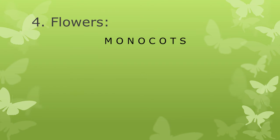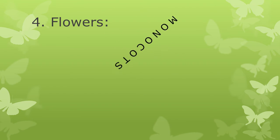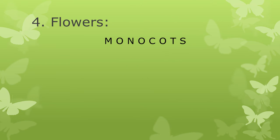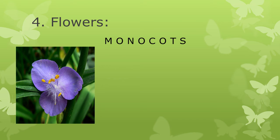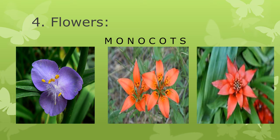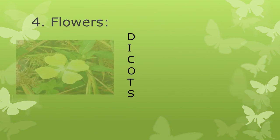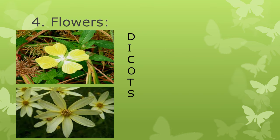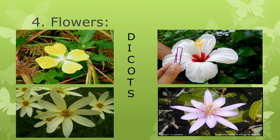Fourth: Flowers. To differentiate Monocot from Dicot plants using flowers, we count the number of petals on the flower. If the number is divisible by 3, then it is a Monocot plant. And if it is divisible by 4 or 5, then it is a Dicot plant.